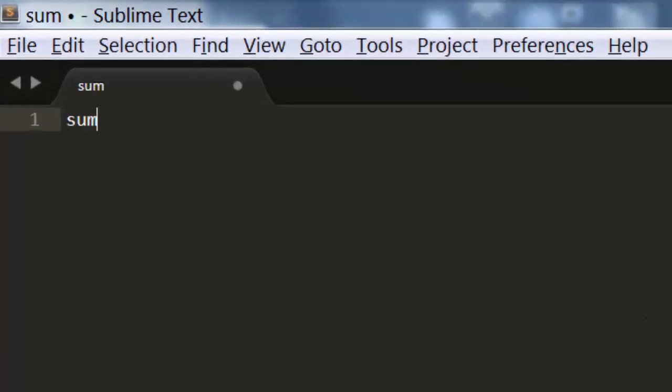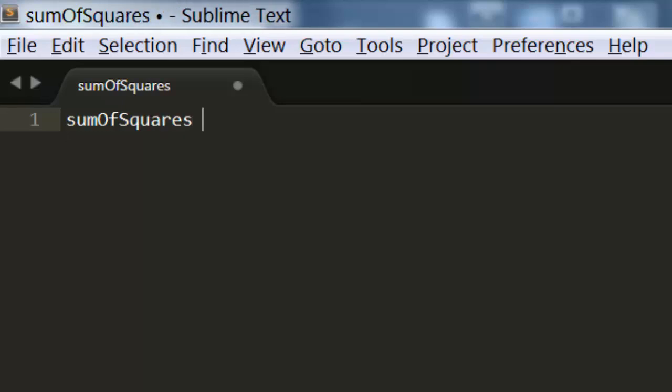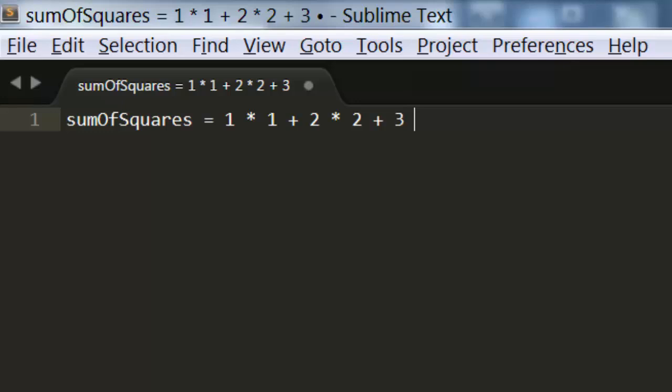So I'm going to create a variable called sum of squares, and I could just type all of this code out, like 1 times 1, plus 2 times 2, plus 3 times 3, but this is going to be really long and boring.